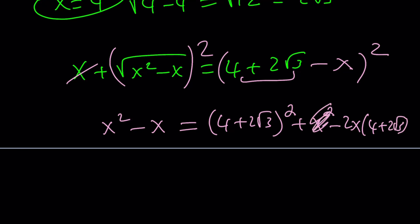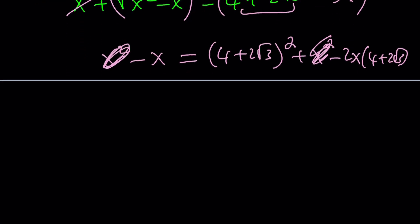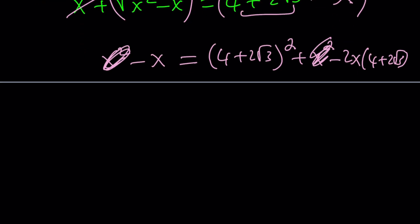Now x squared cancels out. Because that leaves us with a linear equation. So let's go ahead and expand some stuff. We could probably put this on the left hand side with a positive coefficient like this. And then subtract x from it, which is the minus x. It transfers.